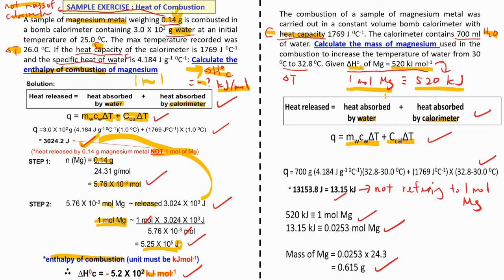We can still calculate the heat released, but it doesn't refer to one mole. We don't know how many moles of magnesium we have, so we use the given information: one mole of magnesium releases 520 kilojoules. If we have 0.025 moles of magnesium, it will release 13.15 kilojoules. Once we have the number of moles, we can then find the mass of magnesium. That's all for bomb calorimetry and enthalpy of combustion.